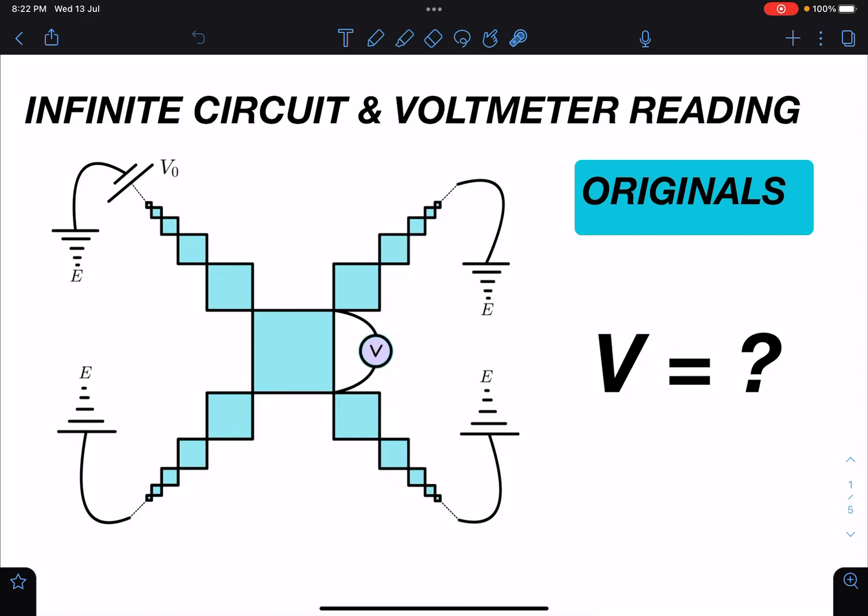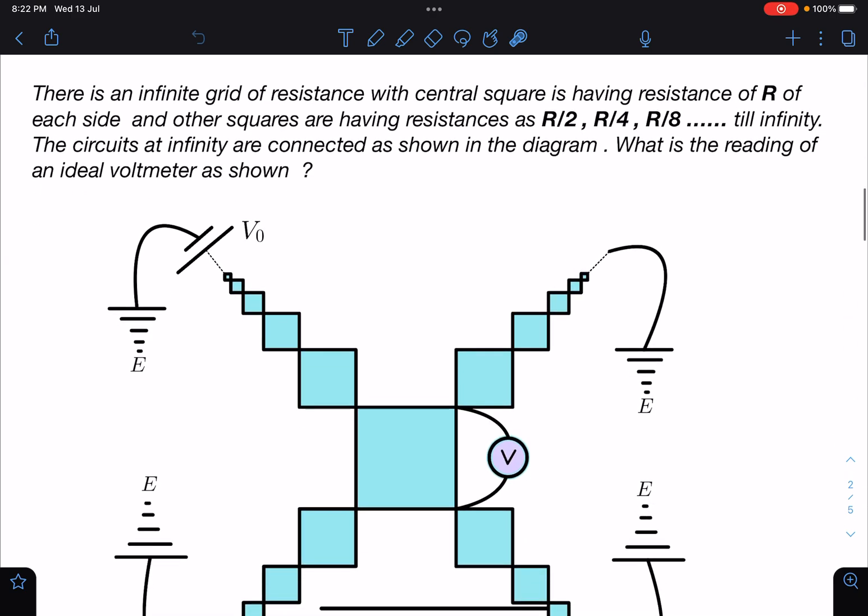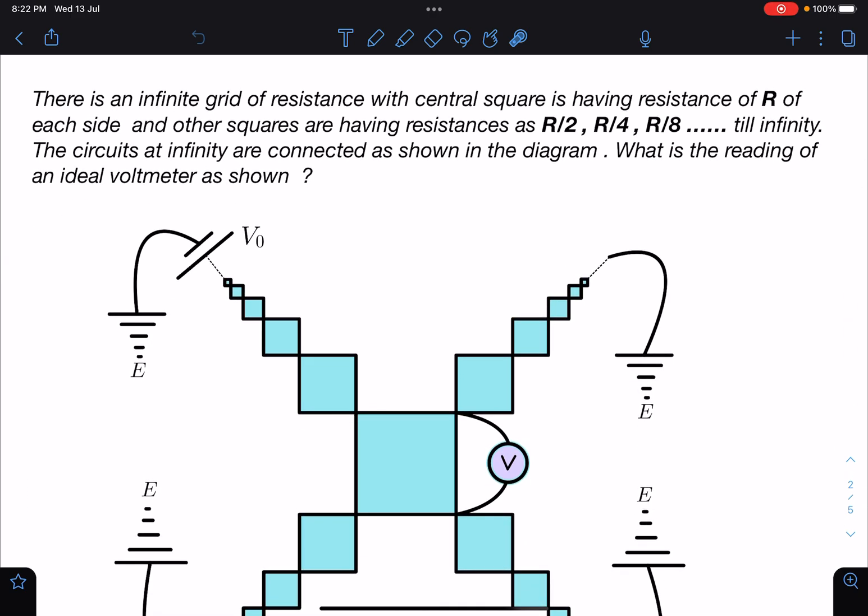Hello everyone, welcome to my channel Indian School of Physics. I'm Natin, and today I have come up with a very amazing problem on infinite circuits where we are going to calculate voltmeter reading. By the way, it is an original problem. So here is the problem statement: there is an infinite grid of resistance with a central square having resistance of R on each side, and other squares having resistances as R by 2, R by 4, R by 8 till infinity.